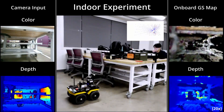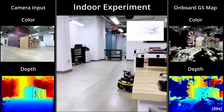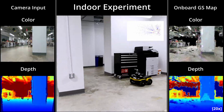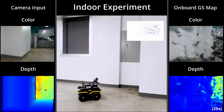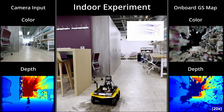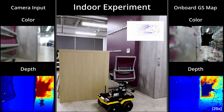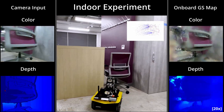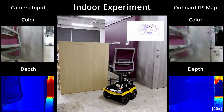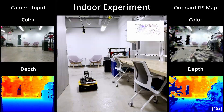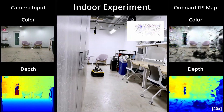We conduct real-world experiments in both indoor and outdoor environments. Since the robot is building the map online, new information such as the presence of a wall may result in a planned path being in collision, causing the robot to re-plan. The on-board sensor feed is shown on the left and the corresponding rendering of the Gaussian map built on the robot in real-time is visualized on the right.